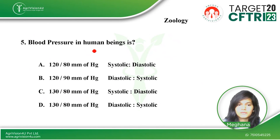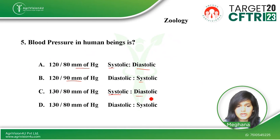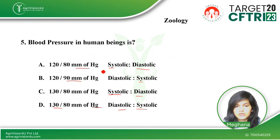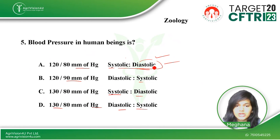The next question is taken from biology. Blood pressure in a human being is — the first option is 120/80 mmHg, systolic to diastolic. The second option is 120/90 mmHg, diastolic to systolic. The third option is 130/80 mmHg, systolic to diastolic. Systolic measures the pressure during the heartbeat, and diastolic is the pressure recorded during the resting stage between heartbeats. The right option is 120/80 mmHg, systolic to diastolic.